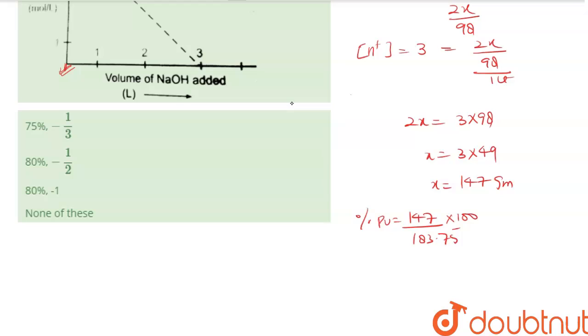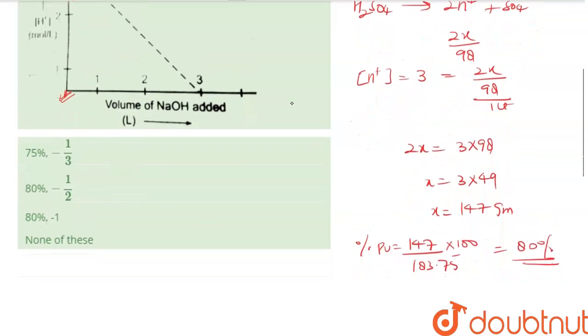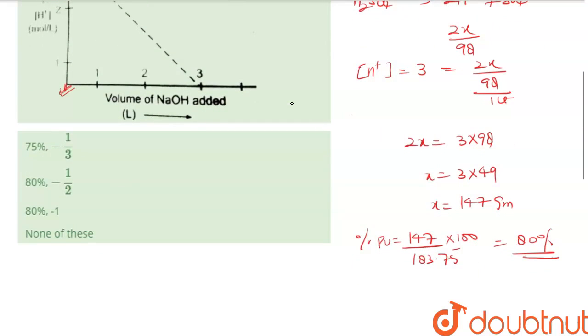So what is the answer? Divide by 183.75, so this is 80%. So this is the answer, 80%. And now they are asking about the slope.